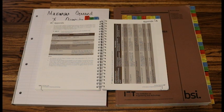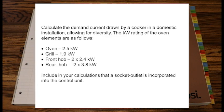So on your screens, you will see the question. It says, calculate the maximum demand current drawn by a cooker in a domestic installation, allowing for diversity. The kilowatt rating of the oven elements are as follows. And we've got an oven as 2.5, a grill 1.9. There's a front hob, and there's two of those, 2 times 2.4, and two rear hobs at 3.8, all in kilowatts.